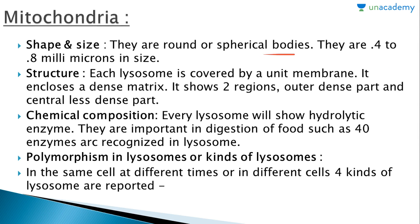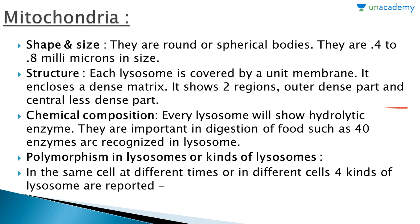Regarding shape and size, lysosomes are round or spherical bodies. They are 0.4 to 0.8 millimicrons in size. Each lysosome is covered with a unit membrane and encloses a dense matrix. It shows two regions: the outer dense part and the central less dense part.